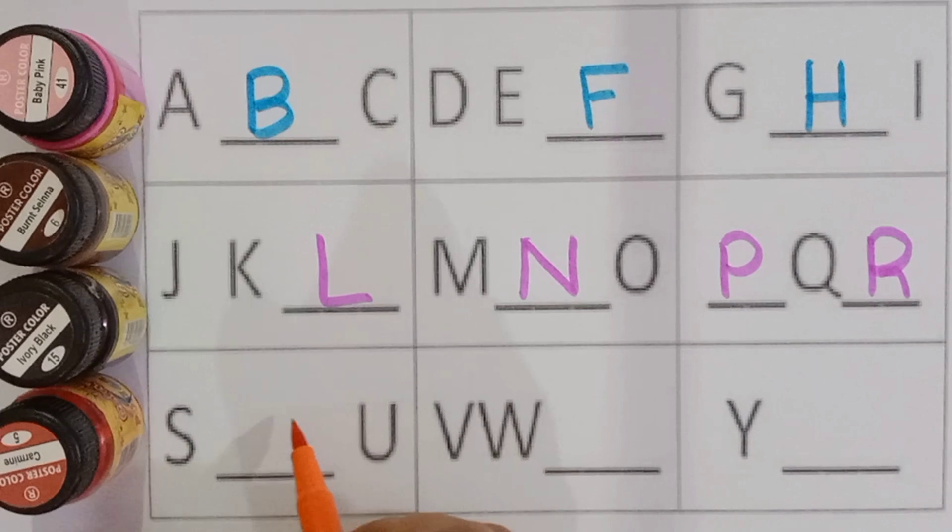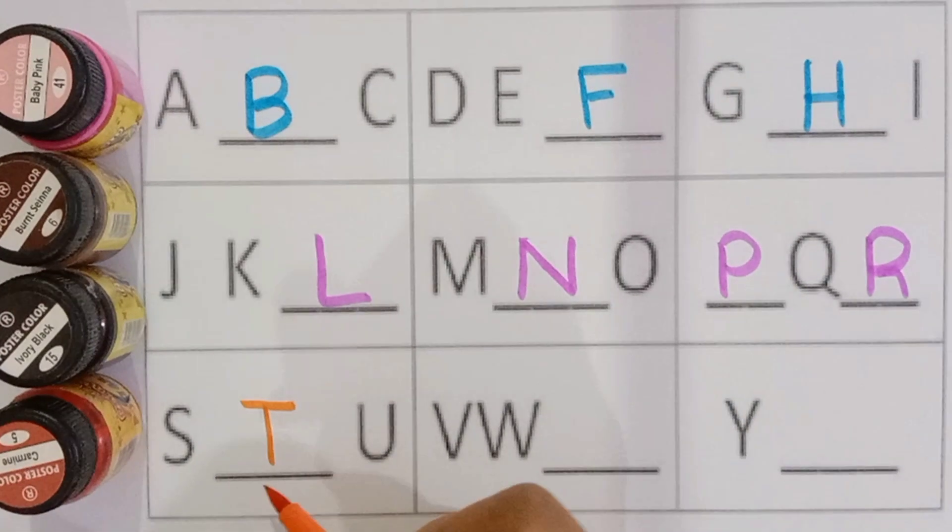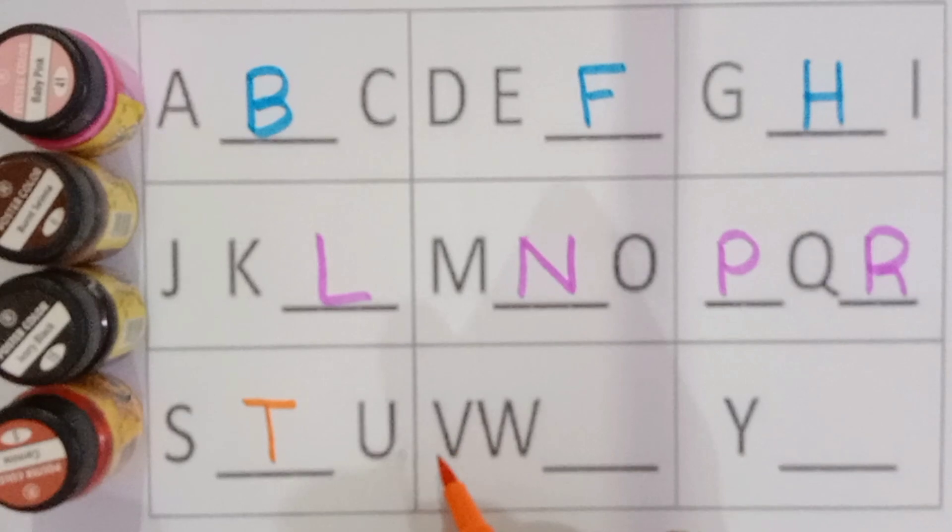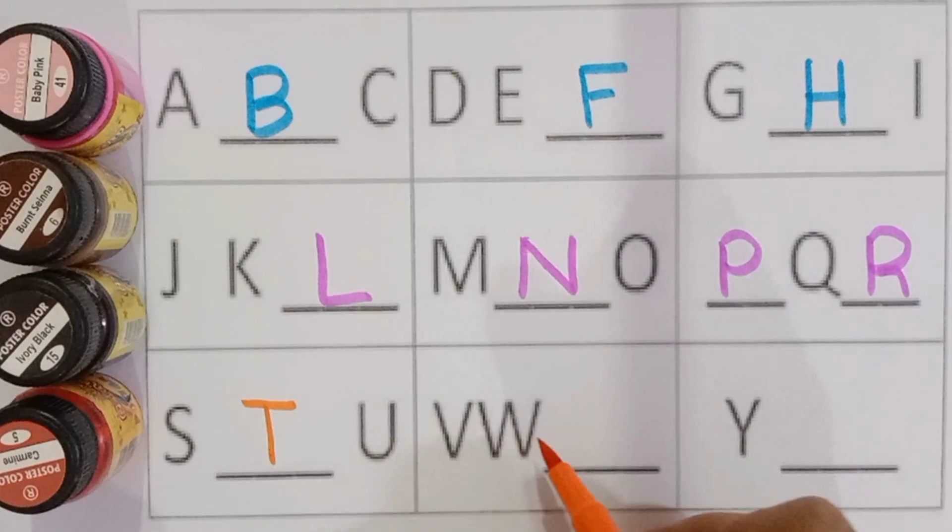S for snake, T for tomatoes, U for umbrella.